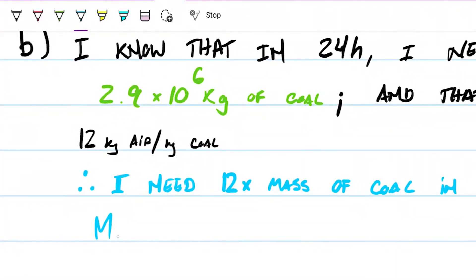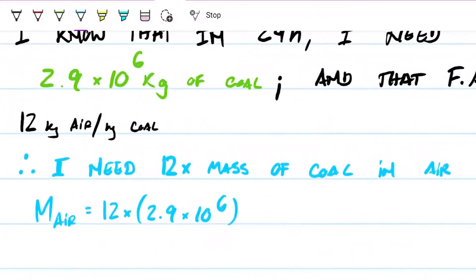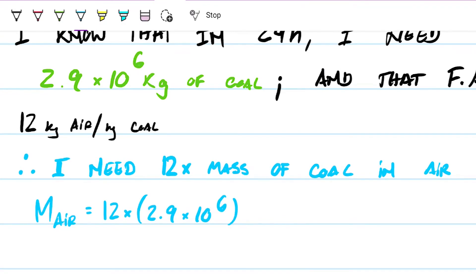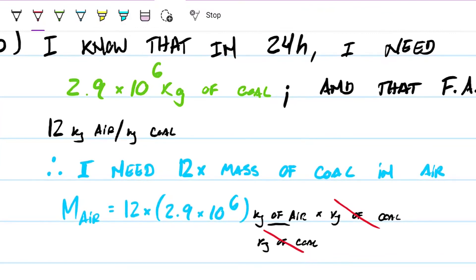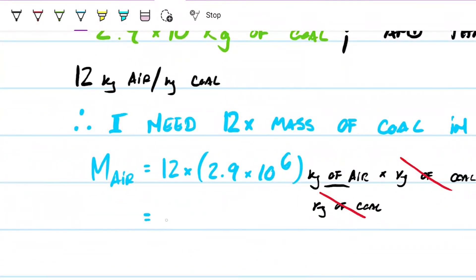And if you want to do this with the units, we're saying that 12 kilograms of air per kilograms of coal, multiplied by kilograms of coal. So we're doing it step by step, slowly, and you see that these guys go away, and we're left with the mass of air that's needed. Don't need to calculate this, but if we wanted to calculate very badly, we would get that this is 3.47 times 10 to the 7th kilograms.